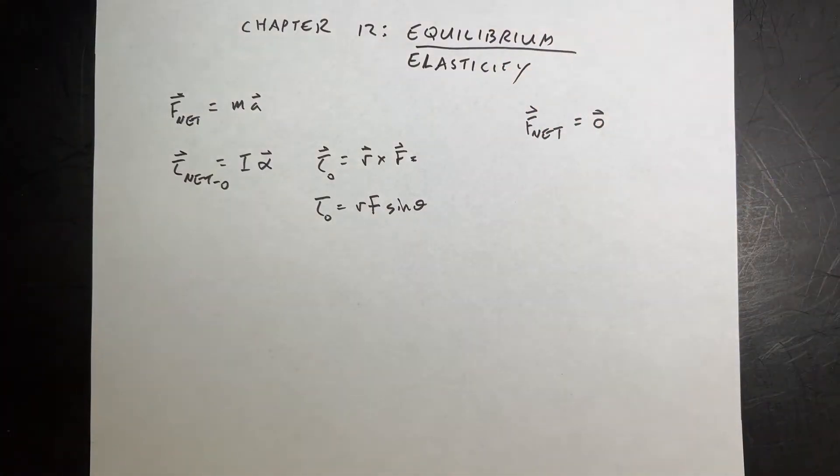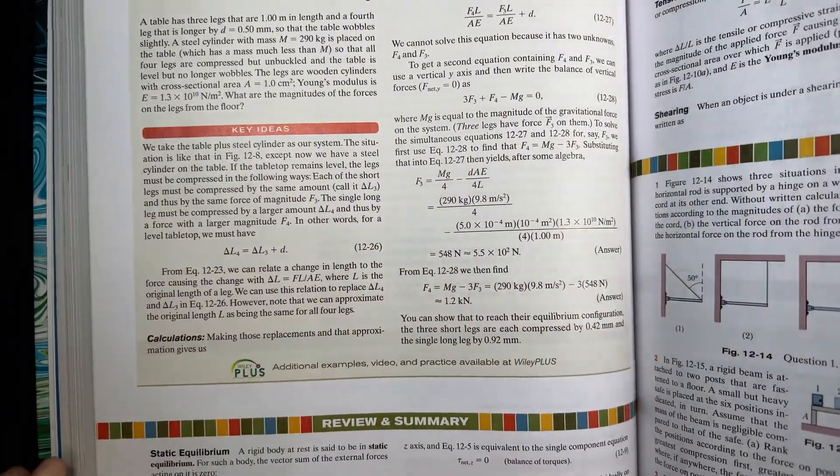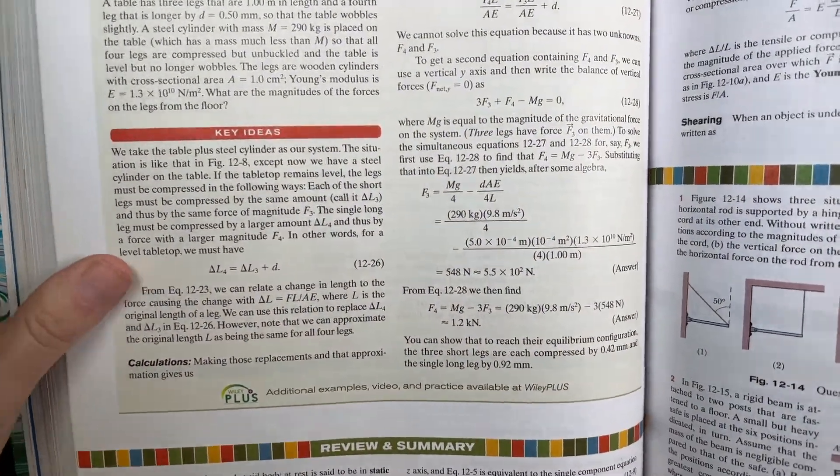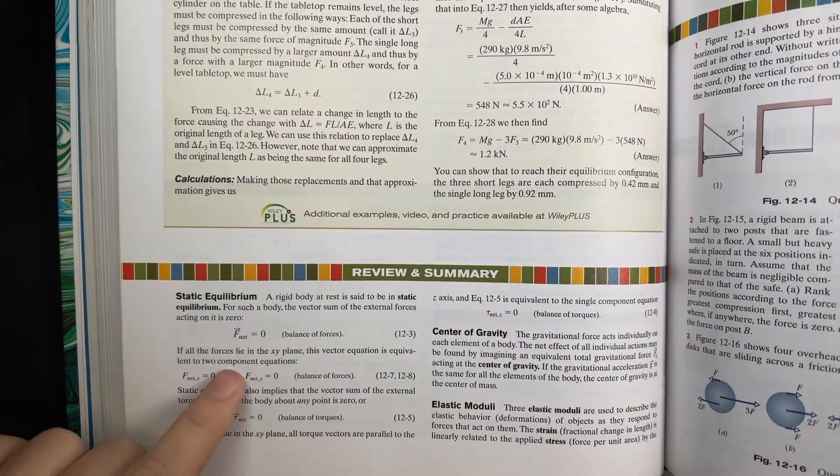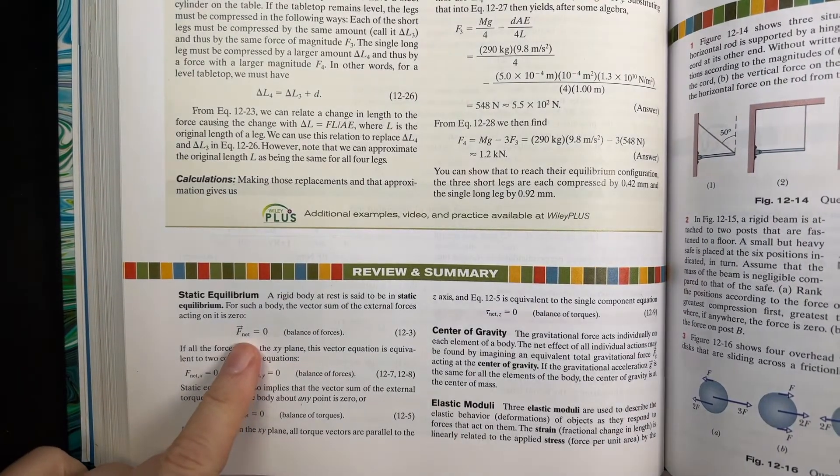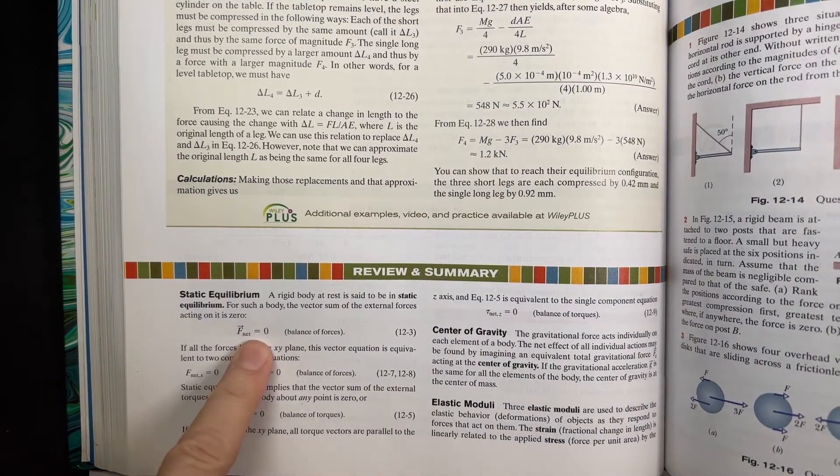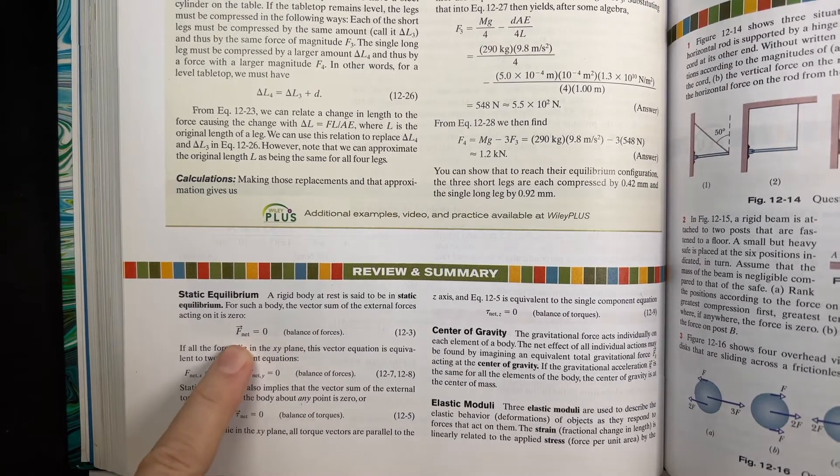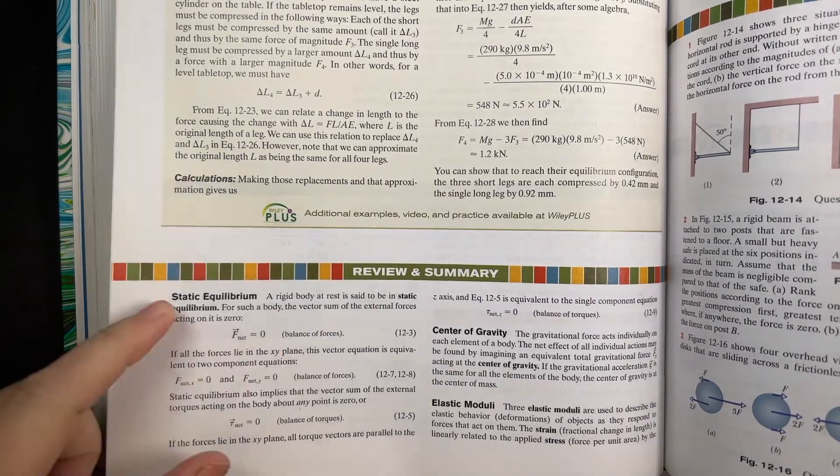Now here's, I don't hate to point out mistakes, but I do want to point it out because I think it is a legitimate issue. Right here, balance of forces, F net equals zero. That says F net, the vector, is zero, the scalar.